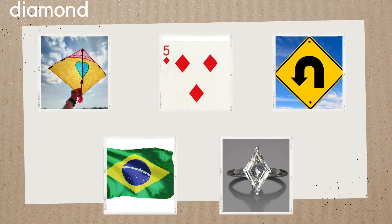A kite, diamonds on a playing card, a sign, the flag for Brazil, and a diamond ring. All have a diamond shape.